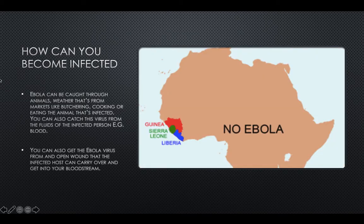How can you become infected? Ebola can be caught through animals, whether from markets, cooking, or eating an infected animal. You can also catch this virus from the bodily fluids of an infected person, for example blood. You can also get the Ebola virus from an open wound that the infected host can transfer into your bloodstream.